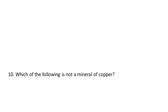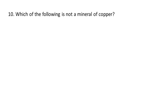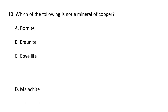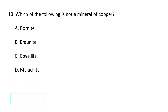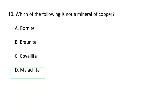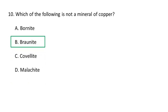Next question: Which of the following is not a mineral of copper? The choices are A. Bornite, B. Braunite, C. Covellite, D. Malachite. The correct option is B. Braunite, because bornite, covellite, and malachite are all ore minerals of copper, whereas braunite is a manganese mineral.